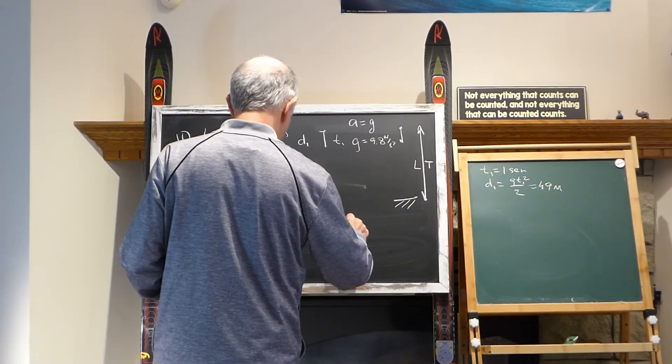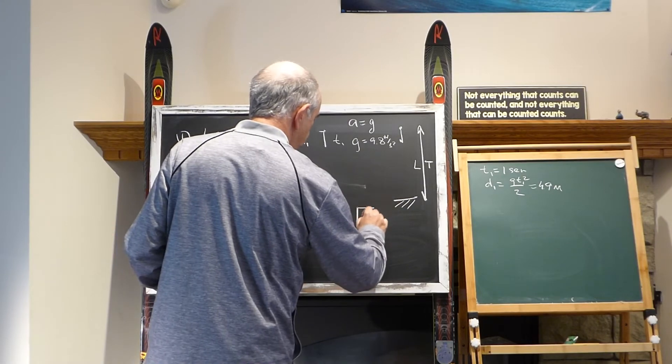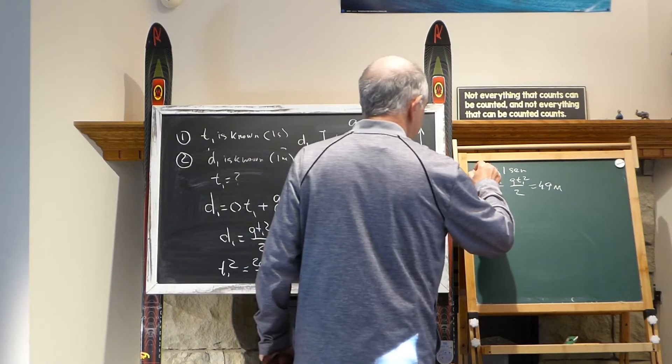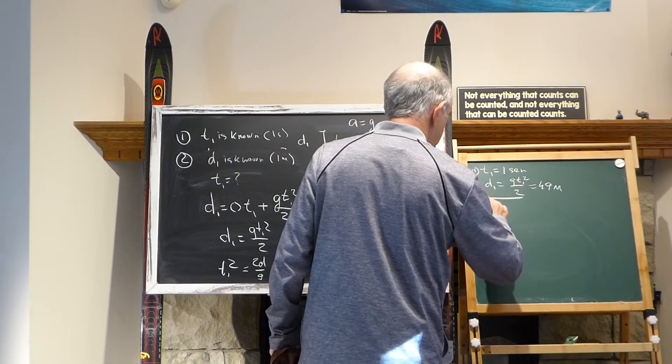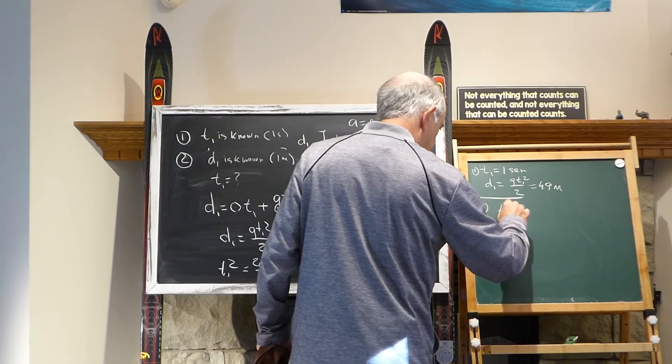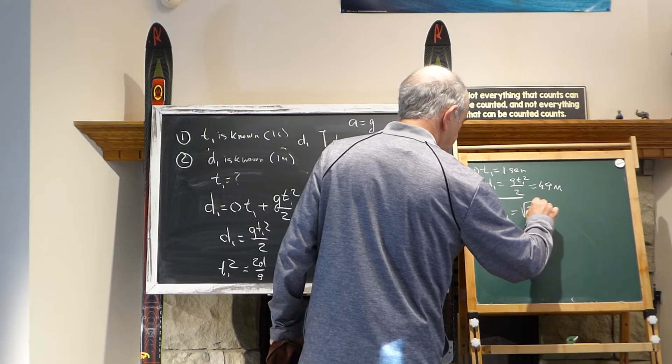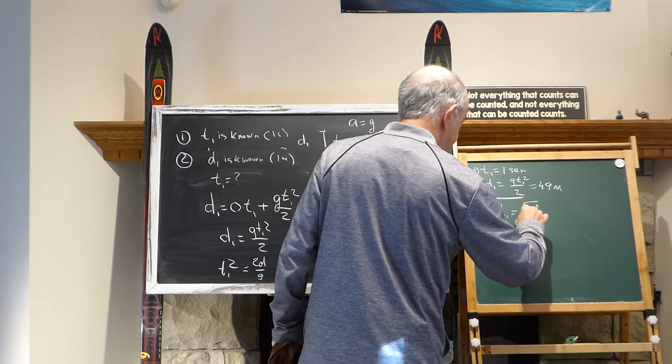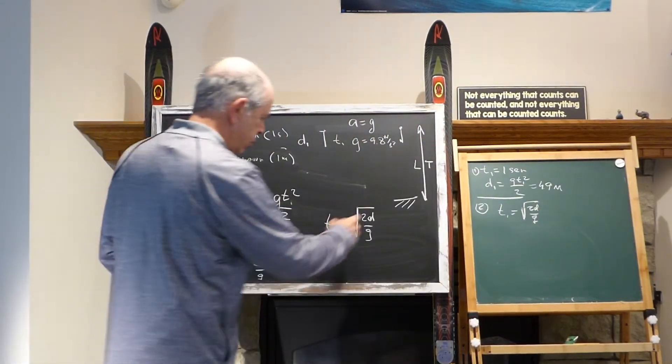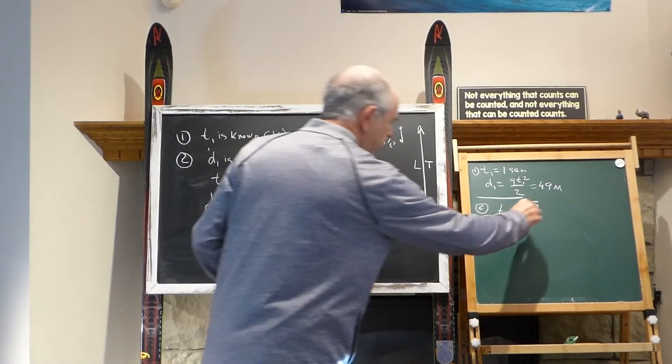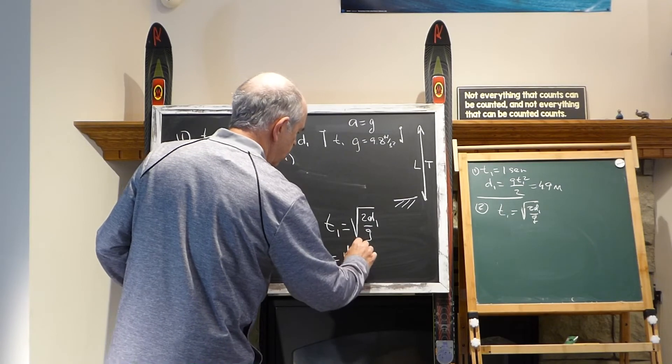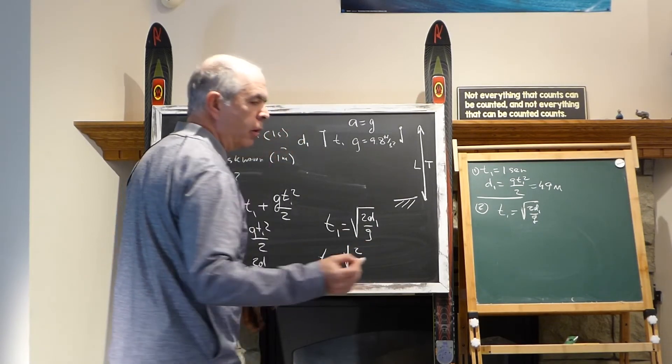Now, T1 equals square root of 2D over G. So, I put this 1, I put this 2, and the formula for T1 becomes square root 2D over G. And it would be the time to cover the first meter. So, D1 is known, and D1 I put here. And, of course, T1 becomes square root 2 divided 9.8.